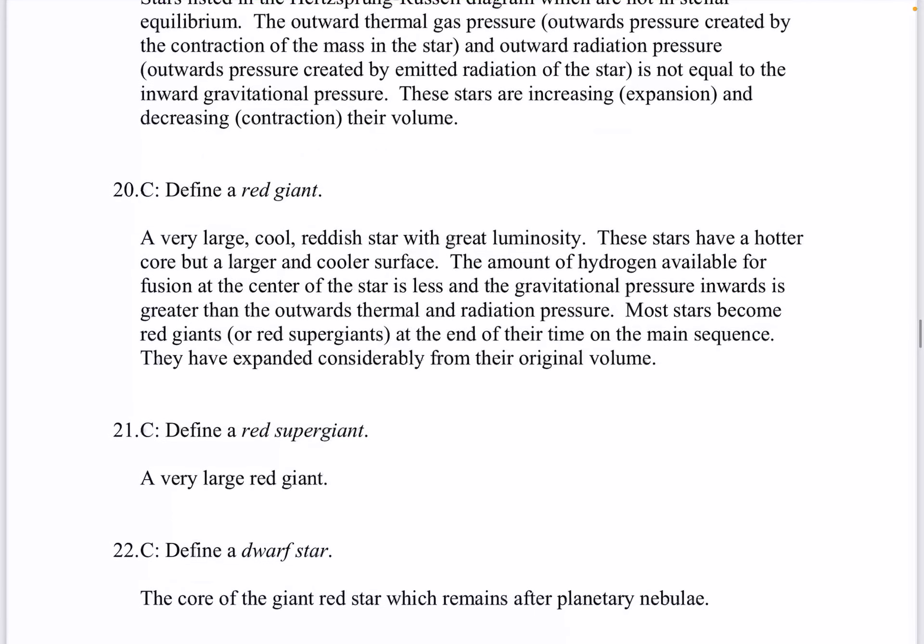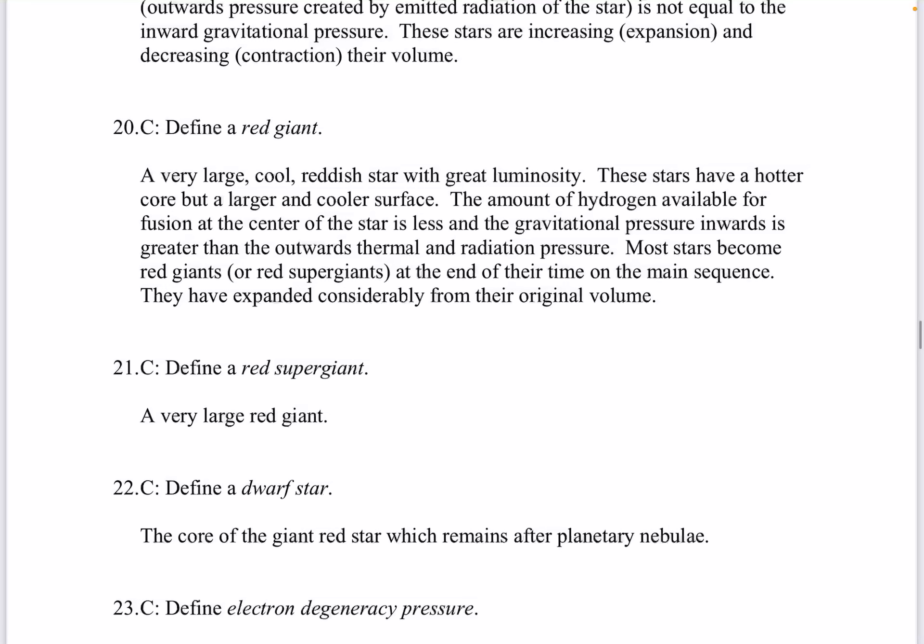Question 20. Define a red giant. A very large, cool reddish star with great luminosity. These stars have a hotter core but a larger and cooler surface. The amount of hydrogen available for fusion at the center of the star is less and the gravitational pressure inwards is greater than the outwards thermal and radiation pressure. Most stars become red giants or red supergiants at the end of their time on the main sequence. They have expanded considerably from their original volume.